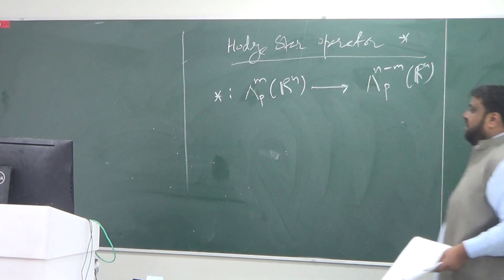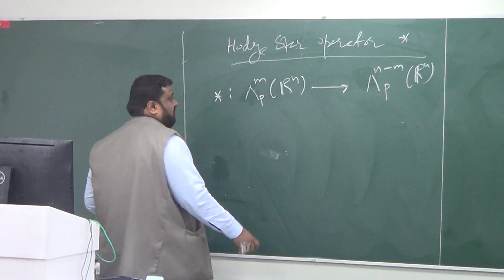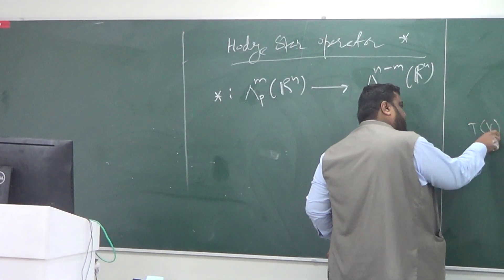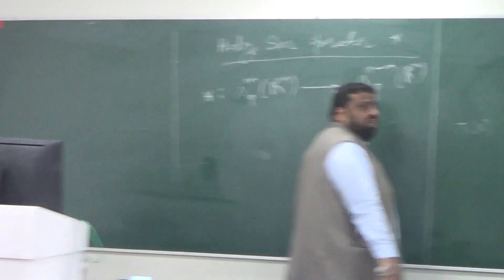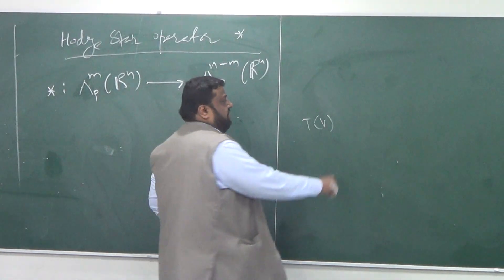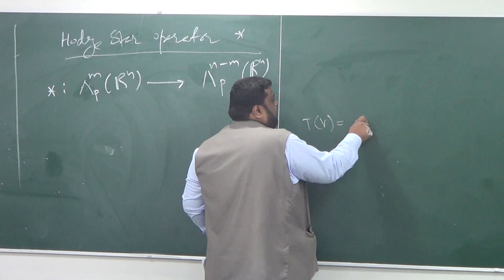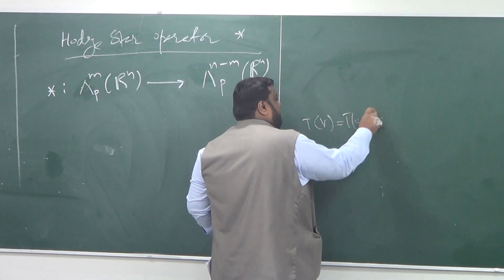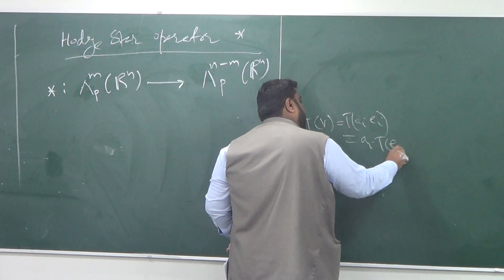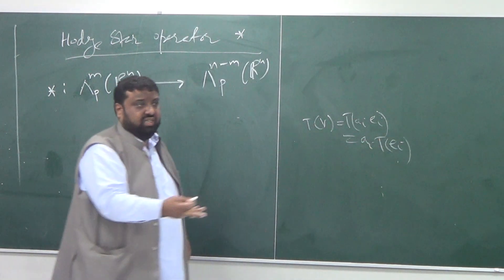So you don't need to specify the map everywhere. Because if you have a linear map and I want to describe what would be its value on any vector V, it's sufficient to describe it since V can be written as a linear combination. So it's sufficient to know how a linear map acts on the basis.